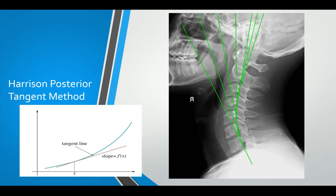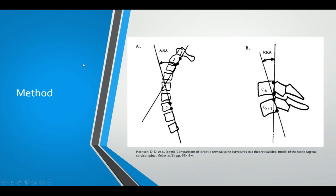When you use the posterior tangent method, you will end up with two main angles. One, demonstrated in A, is the ARA or absolute rotation angle, which is the total angle of curvature. You achieve this by drawing a tangent line along the posterior body margin of C7 and again at C2 — where the two lines intersect gives you the total angle of curvature or absolute rotation angle. As illustrated in B, you can do this between each segment — these are called RRAs or relative rotation angles. The sum of the relative rotation angles spread over all seven vertebrae will give rise to the total angle of curve, so the ARA and the RRAs should all add up to be equal to one another.